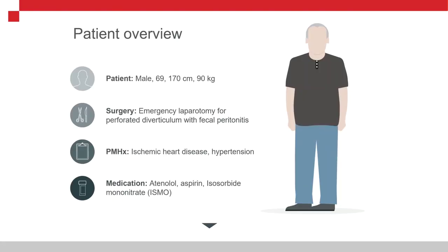Our patient being simulated today is a 69-year-old male who is approximately 90 kilograms. He's undergoing emergency open laparotomy for a perforated diverticulum with presumed faecal peritonitis. Our patient has a past medical history of ischaemic heart disease and controlled hypertension, and prior to surgery was taking low-dose aspirin and isosorbide mononitrate.